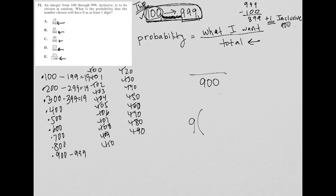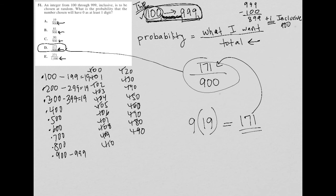Each of those groups have a total of 19 numbers that contain a zero. 9 times 19, you go to your calculator, that is equal to 171. And therefore, my numerator is 171. And therefore, my answer is choice D.